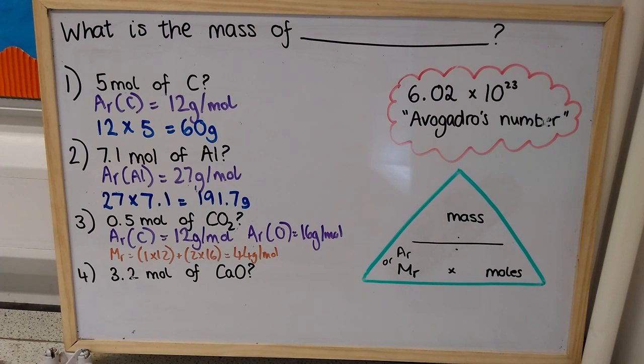And once I've done that, my process is exactly the same as before, I've got 0.5 moles of something that weighs 44 grams per mole, so I just times those two numbers together.